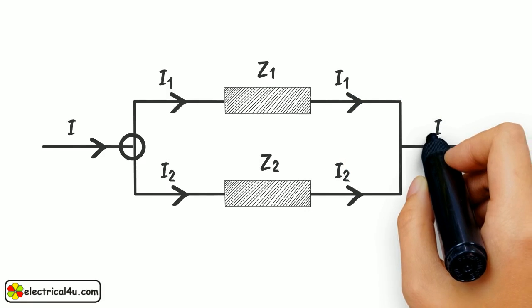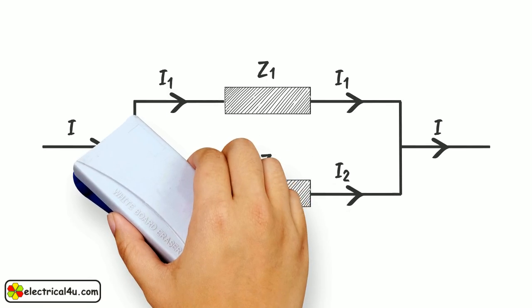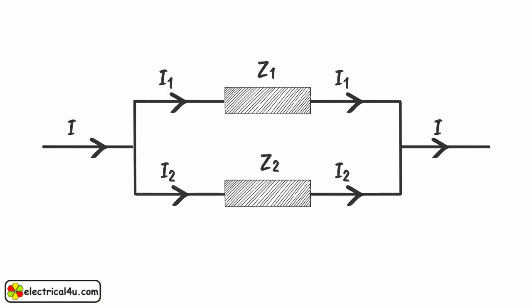Our aim is to determine I1 and I2 in terms of I, Z1, and Z2. As Z1 and Z2 are connected in parallel, voltage drop across each will be same.